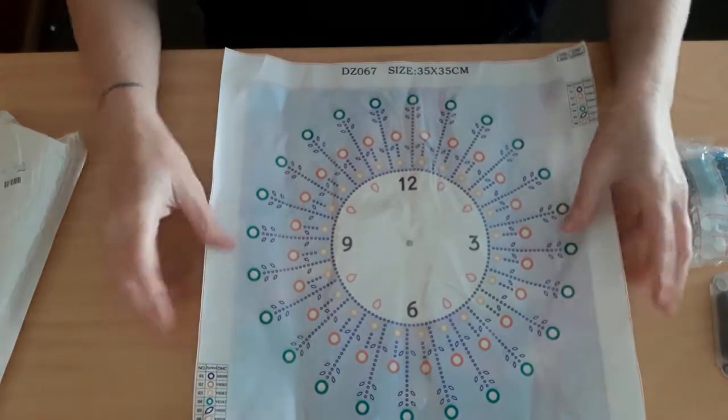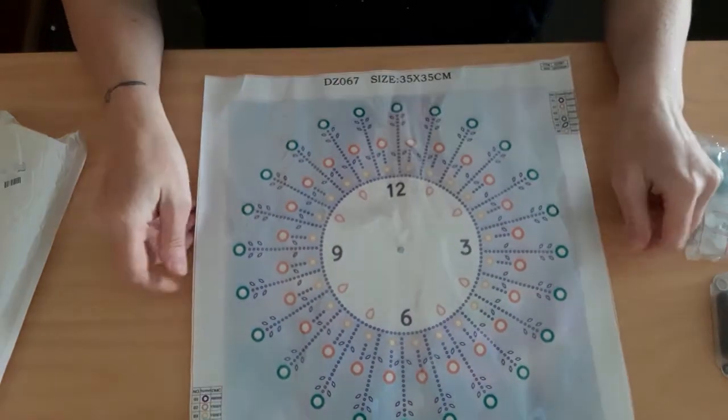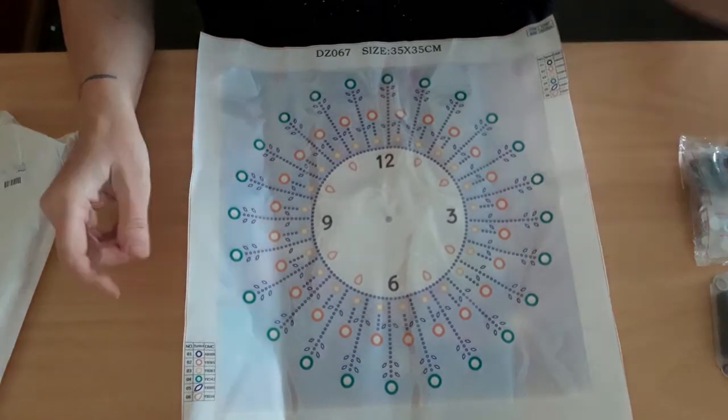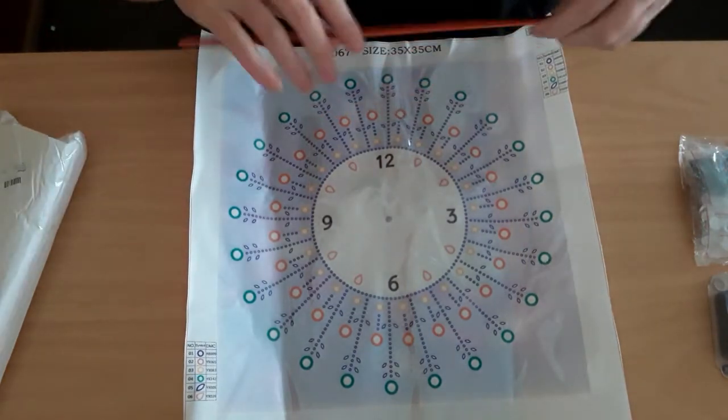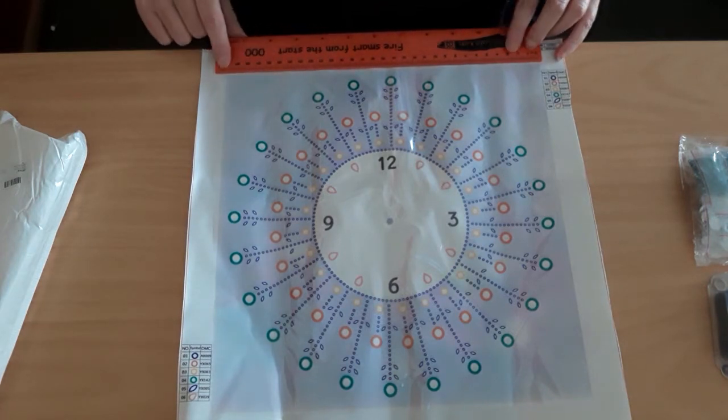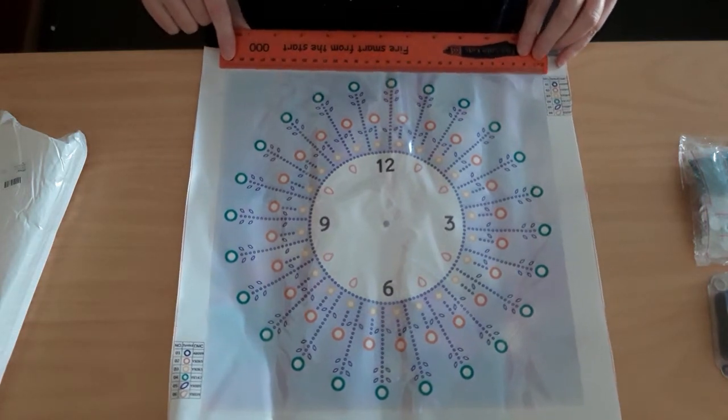So I'll start with the canvas. The canvas is pretty good, it's pretty pliable. It says 35 by 35 but I'm thinking it's about 30 by 30. Yeah so it's 30 centimeters by 30 centimeters.